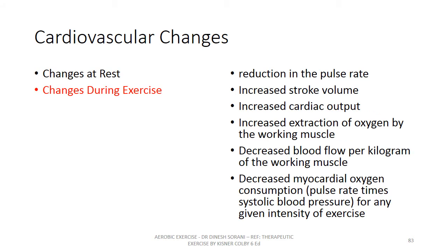During exercise, after training, the pulse rate is relatively much lesser compared to the pre-training state, so there is a net reduction in pulse rate during exercise. Stroke volume is more and cardiac output is also more in a trained person. The working muscles are able to extract more oxygen during exercise, with relatively less blood flowing through the muscle, as the muscle extracts oxygen at a higher rate. Myocardial oxygen consumption is less and the heart works with higher efficiency.